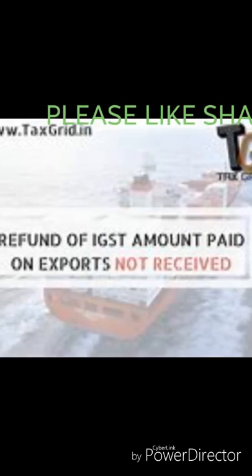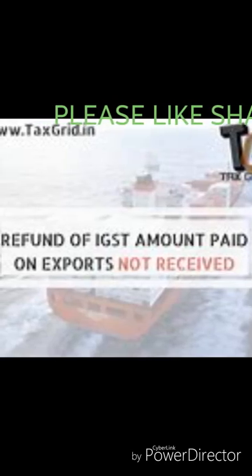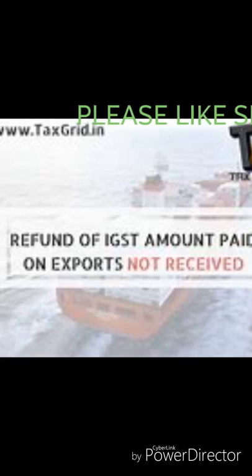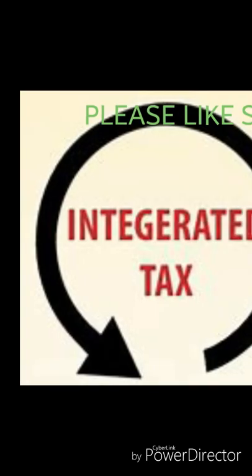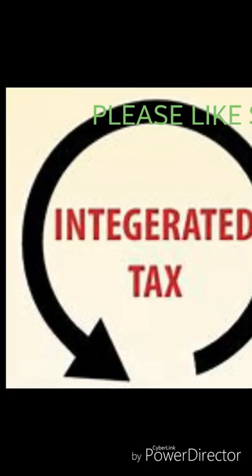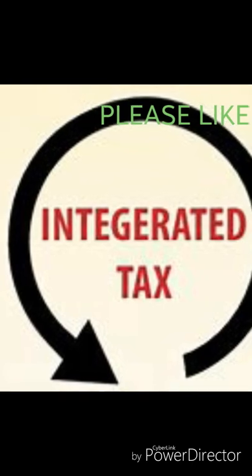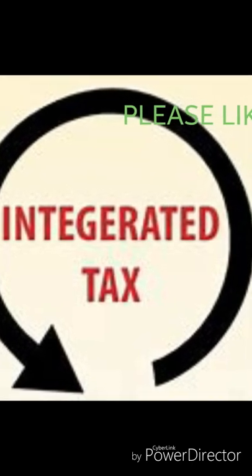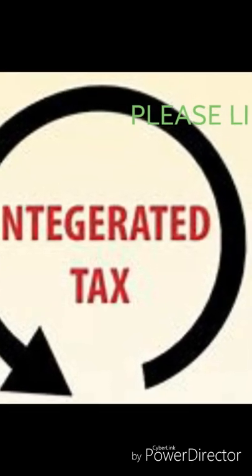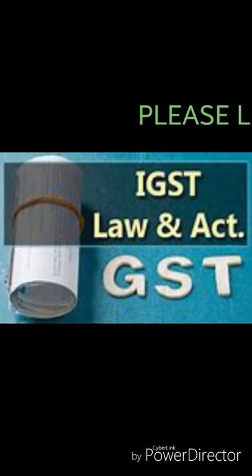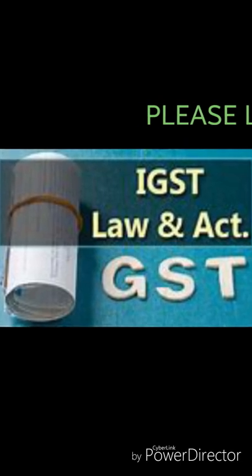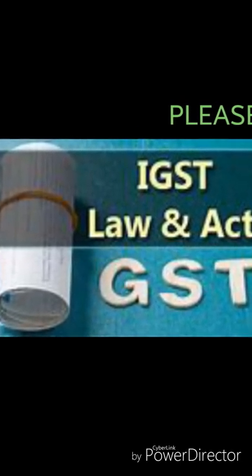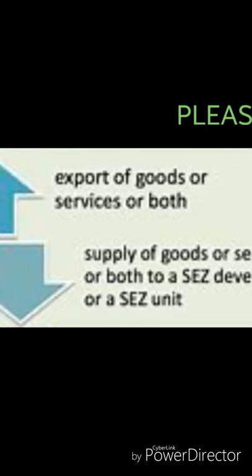Document 9: Copy of GSTR-3B for the relevant period. Document 10: Copy of GSTR-1 for the relevant period. Document 11: Copy of Tax Paid Challan for the relevant period. Document 12: Copy of cancelled cheque evidencing bank account details for the purpose of refund.